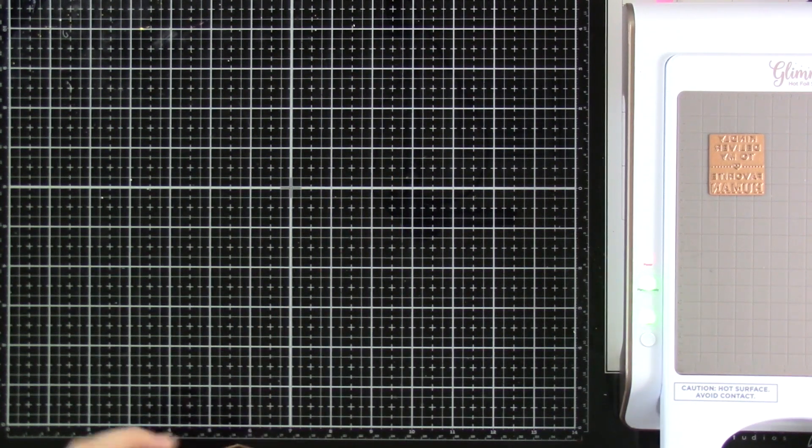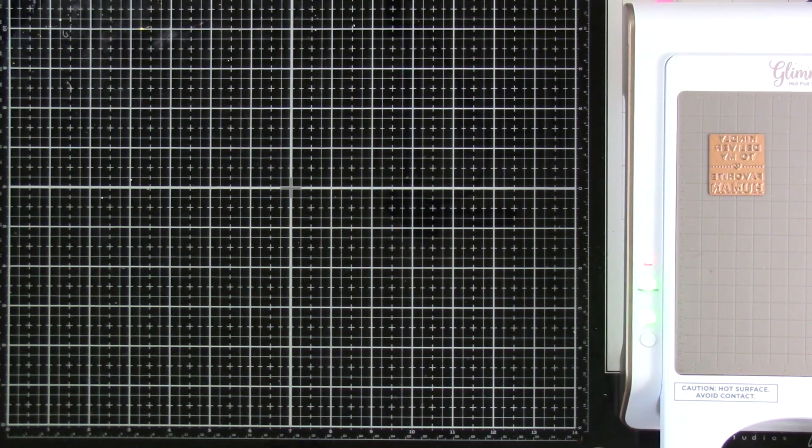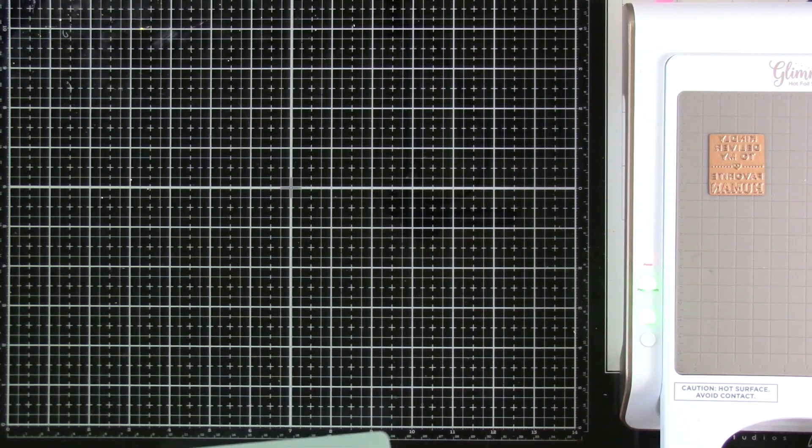But you just definitely want to make sure it's nice and hot. And as I'm doing this, no worries. My boys are far away from the heat plate. But they're also smart enough not to come too close to it. Because they can tell it's hot. I'm going to bring in my die cutting machine.